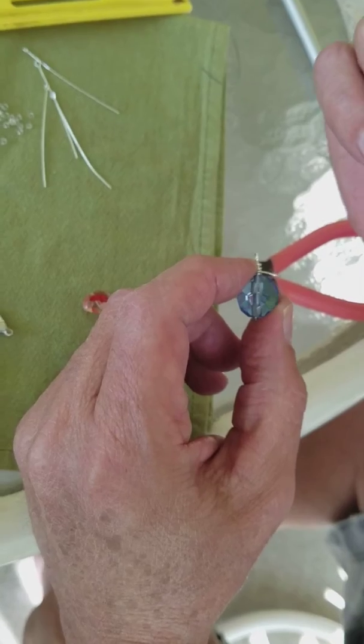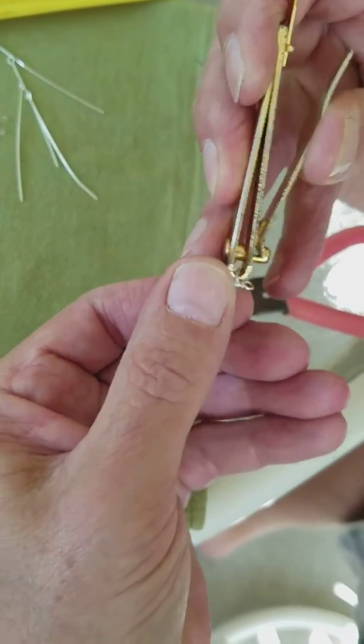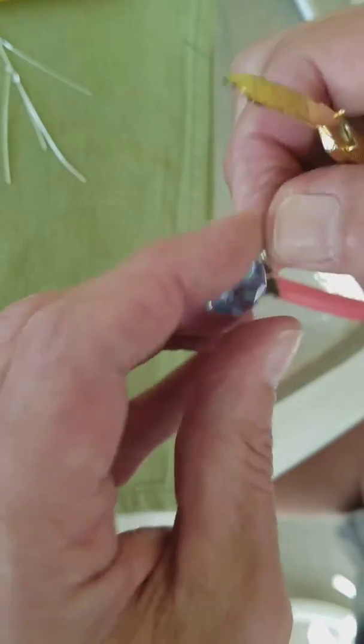Clippers are your best friend with wire wrapping. They also have some expensive tools, but you can bring your nail clippers really cheap. And then just clip off your excess.